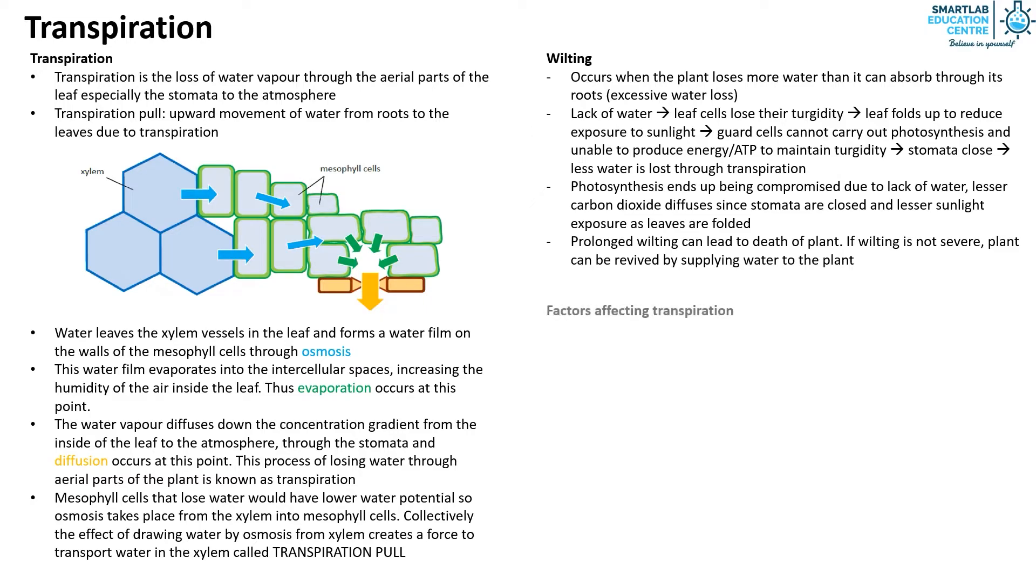Lastly, we will explore the four factors that affect transpiration. First is air movement or wind. At higher wind speed, there is a higher rate at which water is removed from within the vicinity of the leaf. This creates a steeper concentration gradient, thus a higher rate of transpiration.